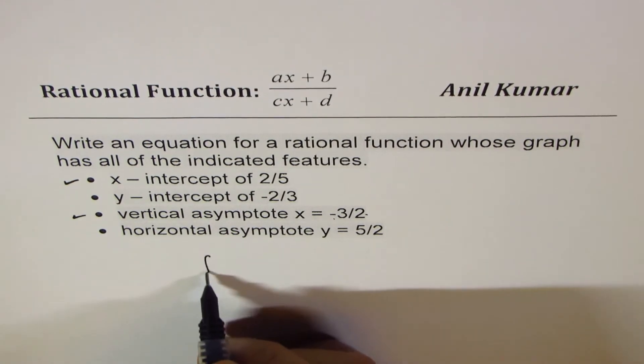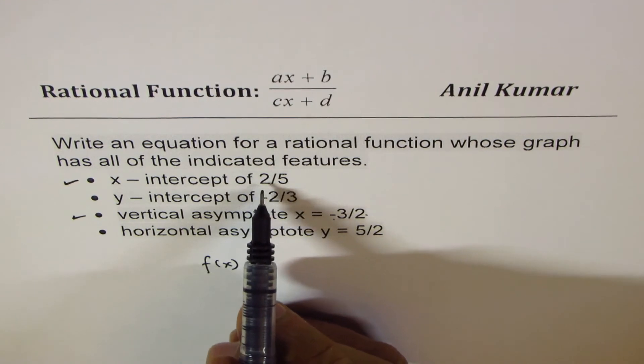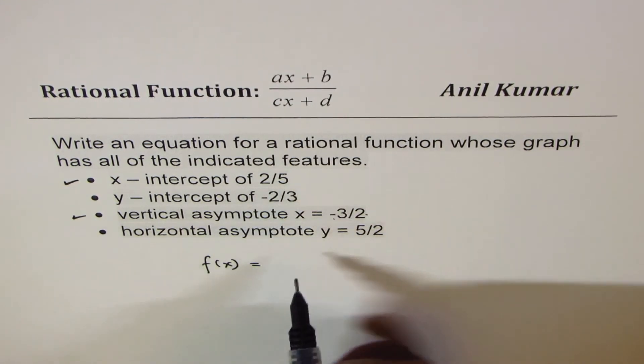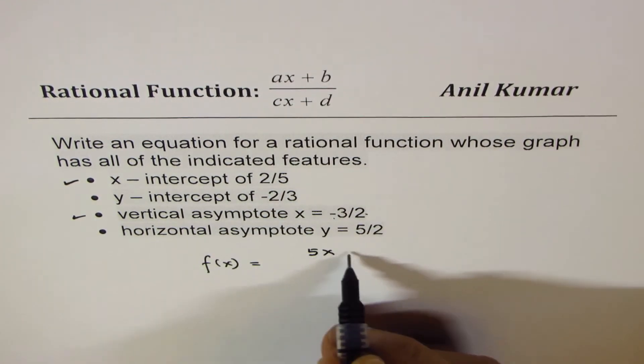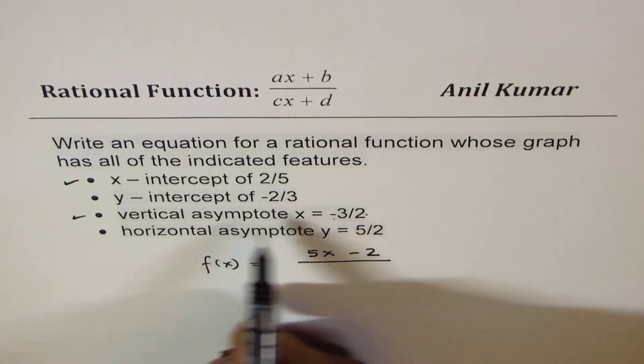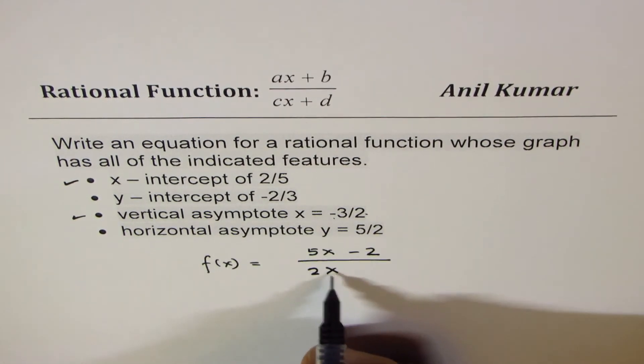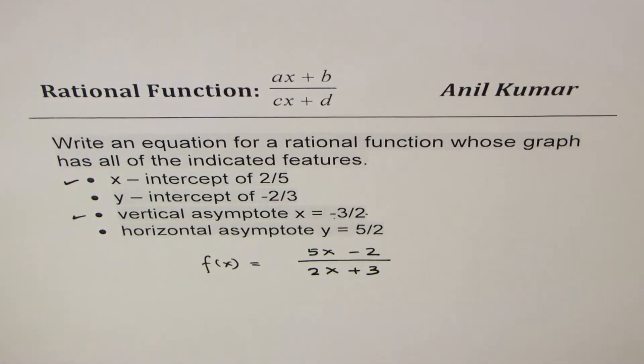So we write our function f of x as equal to, numerator should be 0 for 2 over 5. That means 5x minus 2. Perfect. Denominator should be 0 for vertical asymptote to be at minus 3 over 2. That means 2x plus 3.